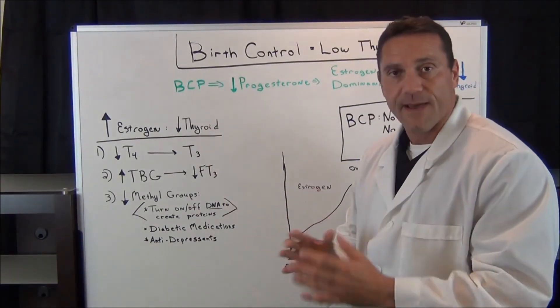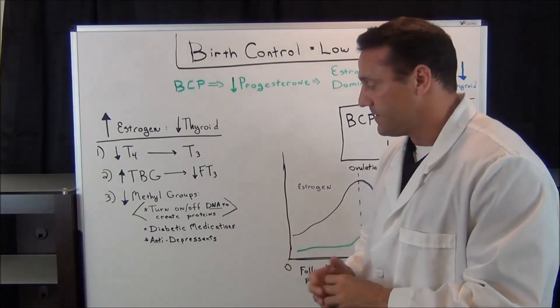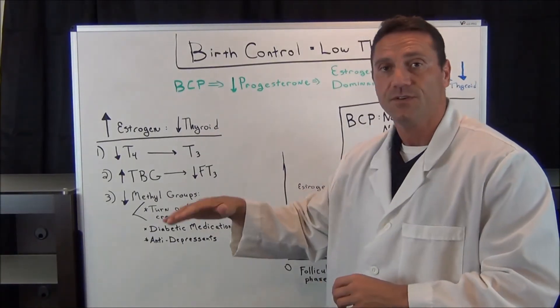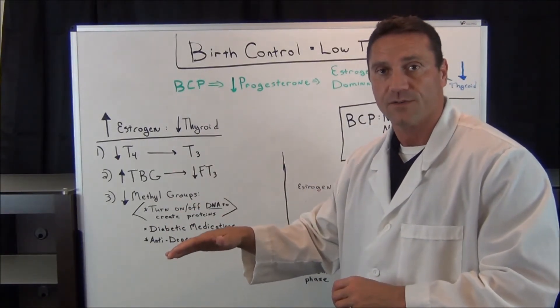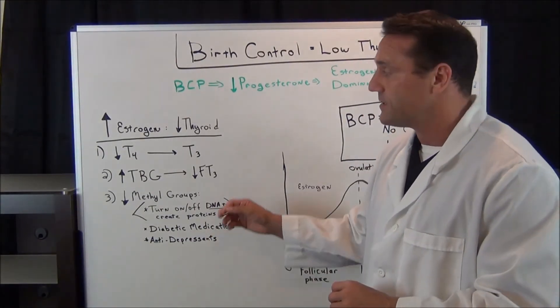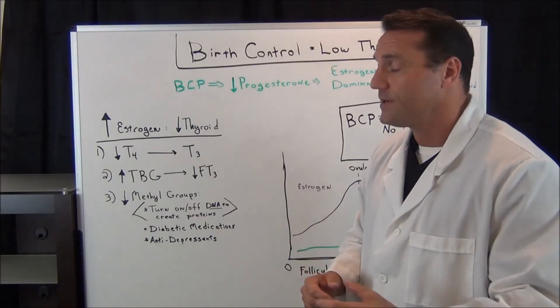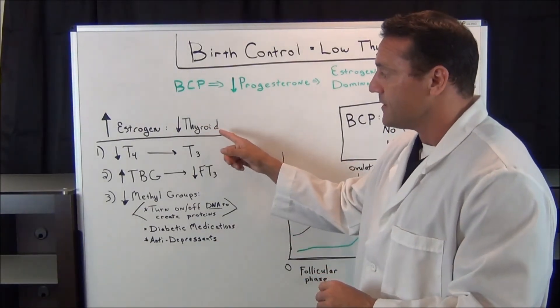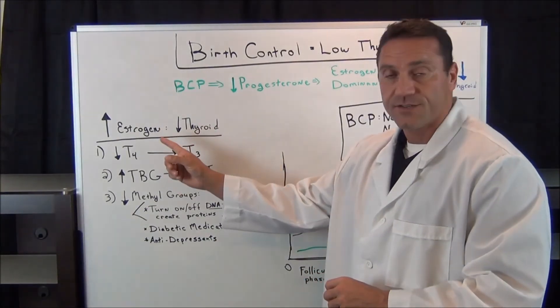Now, if you're a diabetic on diabetes medication, if you're on antidepressants, those will decrease the methyl groups as well. So this is where a side effect of being on diabetic medication and antidepressants and birth control pills will give you a low functioning thyroid because you're more estrogen dominant.